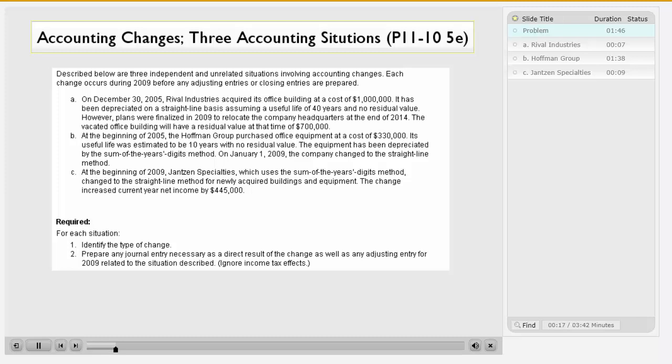A. On December 30, 2005, Rival Industries acquired its office building at a cost of a million dollars. It has been depreciated on a straight-line basis, assuming a useful life of 40 years and no residual value. However, plans were finalized in 2009 to relocate the company headquarters at the end of 2014. The vacated office building will have a residual value at that time of $700,000.